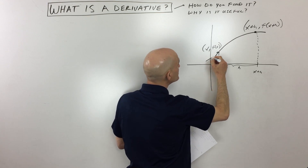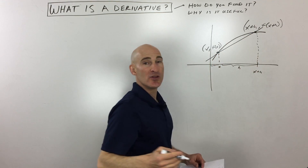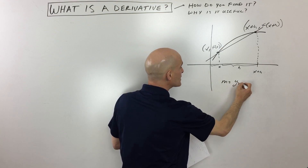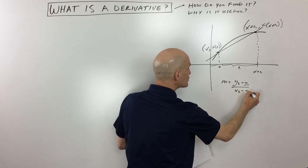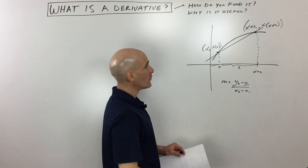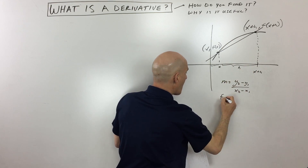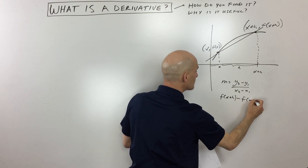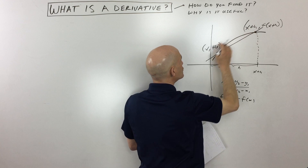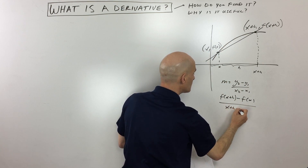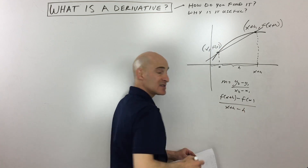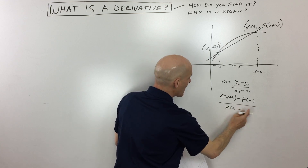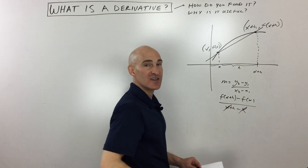Now what we're going to do is find the slope between those two points. When you find the slope, remember your slope formula from algebra: it's y2 minus y1 over x2 minus x1. In this case, it's going to be f of x plus h — that's the y value — minus f of x, divided by x2 minus x1, which is x plus h minus x. You can see that the x's are canceling and we just have h in the denominator.